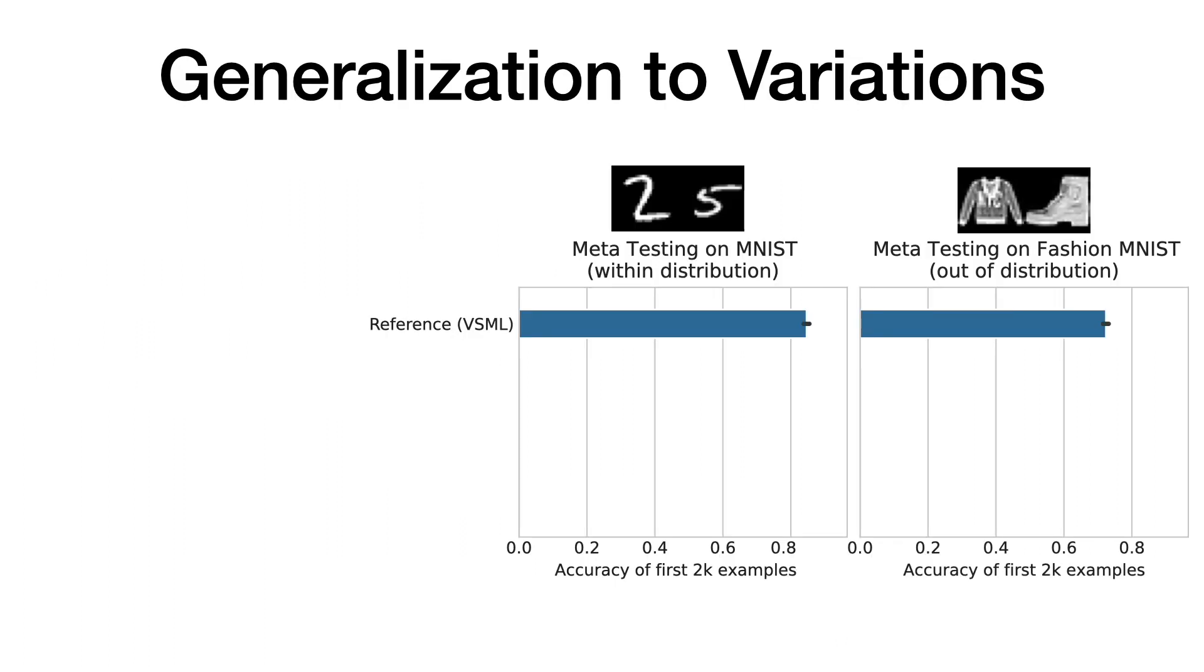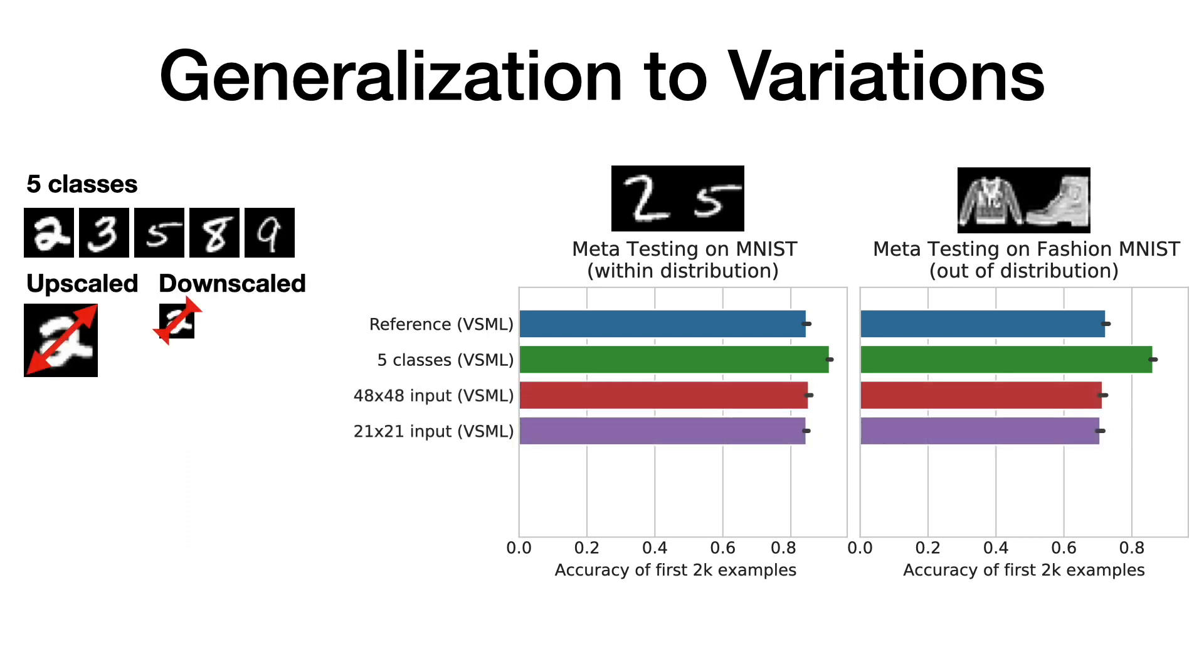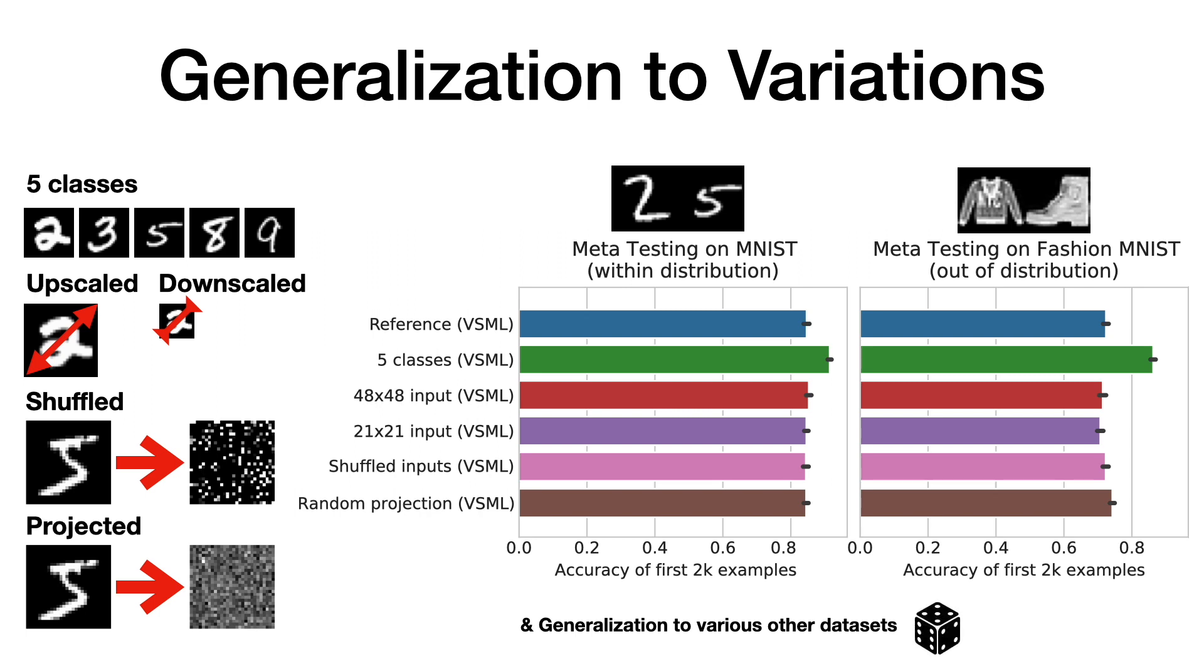The meta-learned learning algorithm does not only generalize to a different dataset, but also other variations, such as different numbers of classes, upscaling of the inputs, or downscaling of the inputs, even learning on a shuffled dataset yields similar performance, or projecting the entire dataset using a random projection matrix. Finally, it generalizes to various other datasets, like randomly generated classification tasks, or determining the sign of a sum of inputs. In conclusion, the meta-learned learning algorithm does not rely on feature reuse, but rather we have discovered an algorithmic learning procedure.